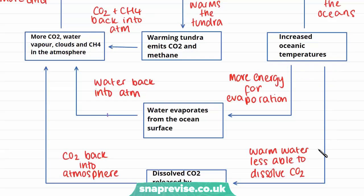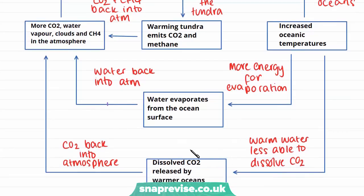The second impact is that with warmer oceanic temperatures, carbon dioxide is dissolved in the oceans, but when temperatures increase, less carbon dioxide can be dissolved. So this dissolved carbon dioxide is released from the oceans and back into the atmosphere. Overall, increased oceanic temperatures are releasing water vapour and carbon dioxide back into the atmosphere.